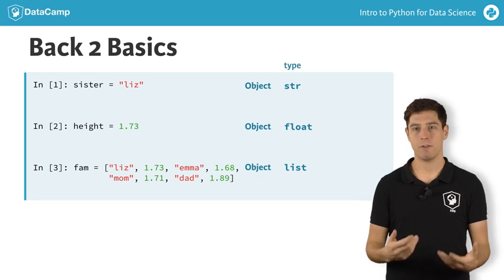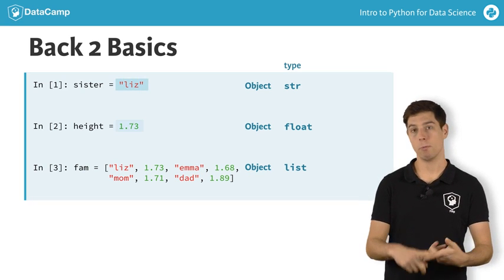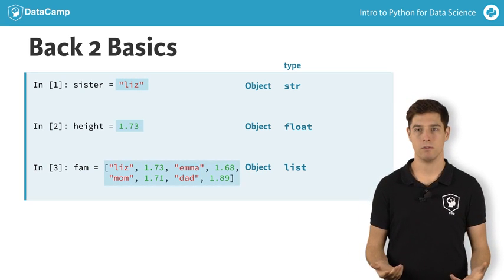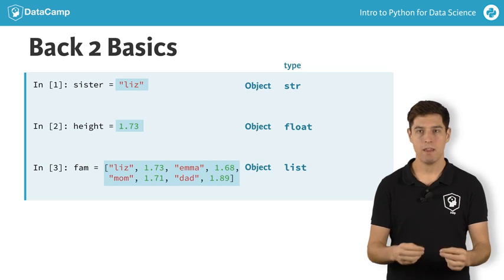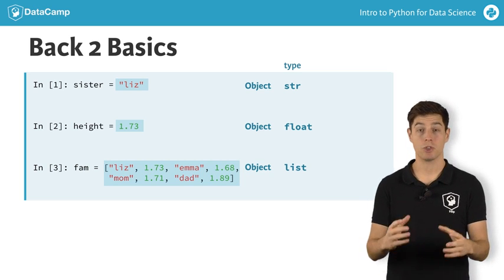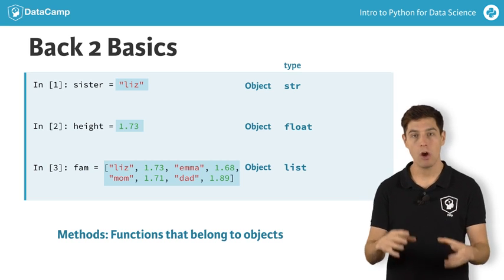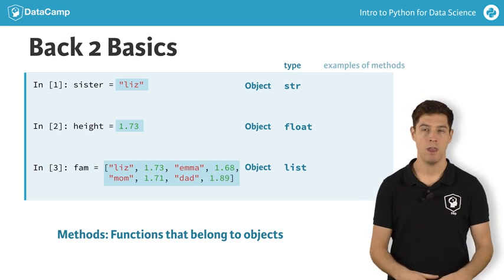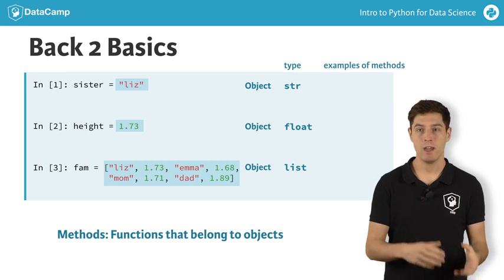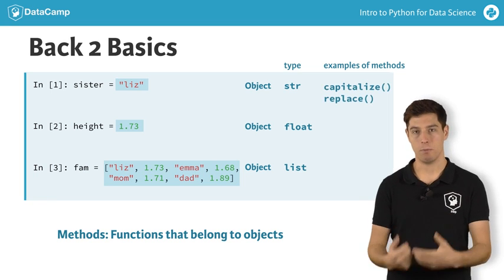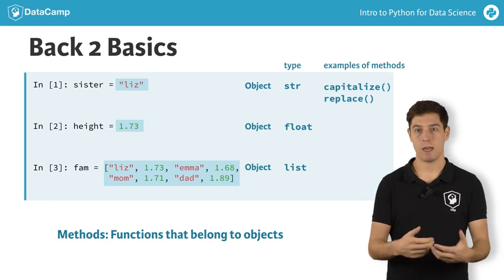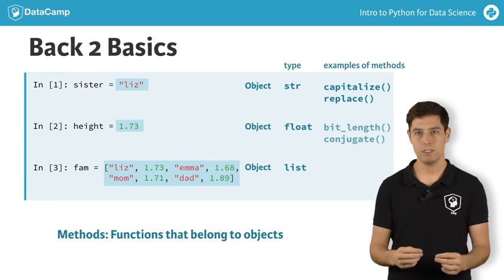And of course, they represent the values you gave them, such as list, 1.73, and an entire list. But next to that, Python objects also come with a bunch of so-called methods. You can think of methods as functions that belong to Python objects. A Python object of type string has methods, such as capitalize and replace, but also objects of type float and list have specific methods depending on the type.